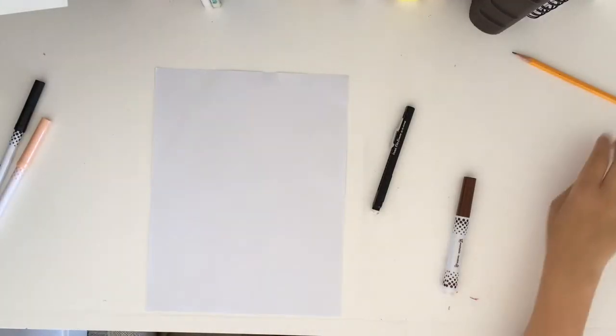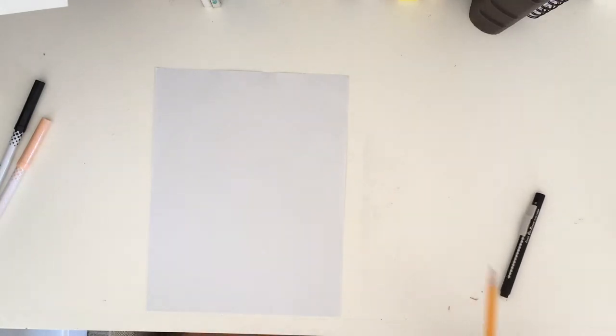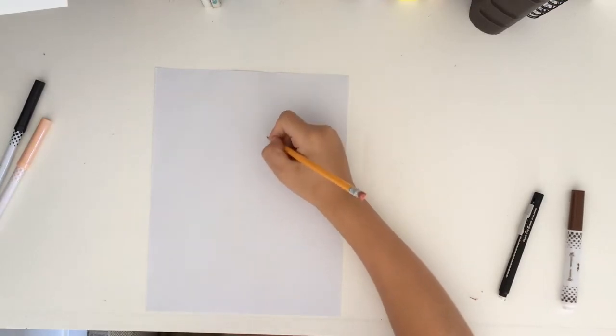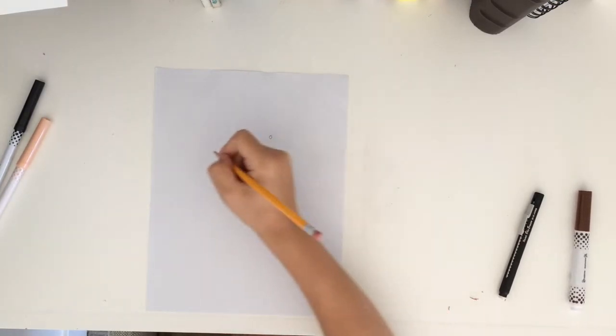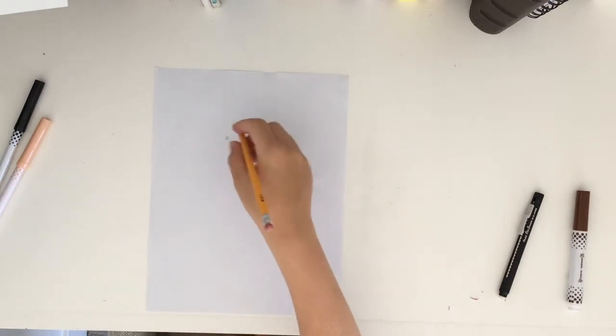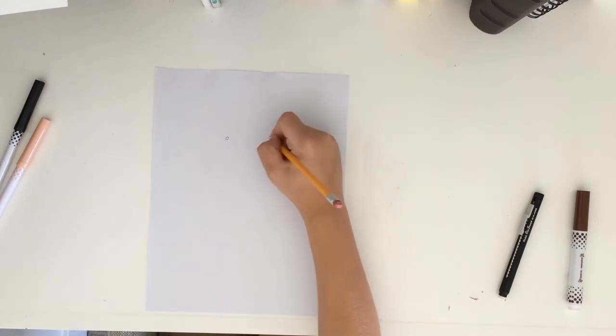Okay, so our first step to drawing our meerkat is to draw his eyes. They're kind of on the side of his face and they're kind of black beady eyes. So we're gonna draw the first eye, we're gonna draw the second eye so that it should look like two very small circles, and then we're gonna shade those in.